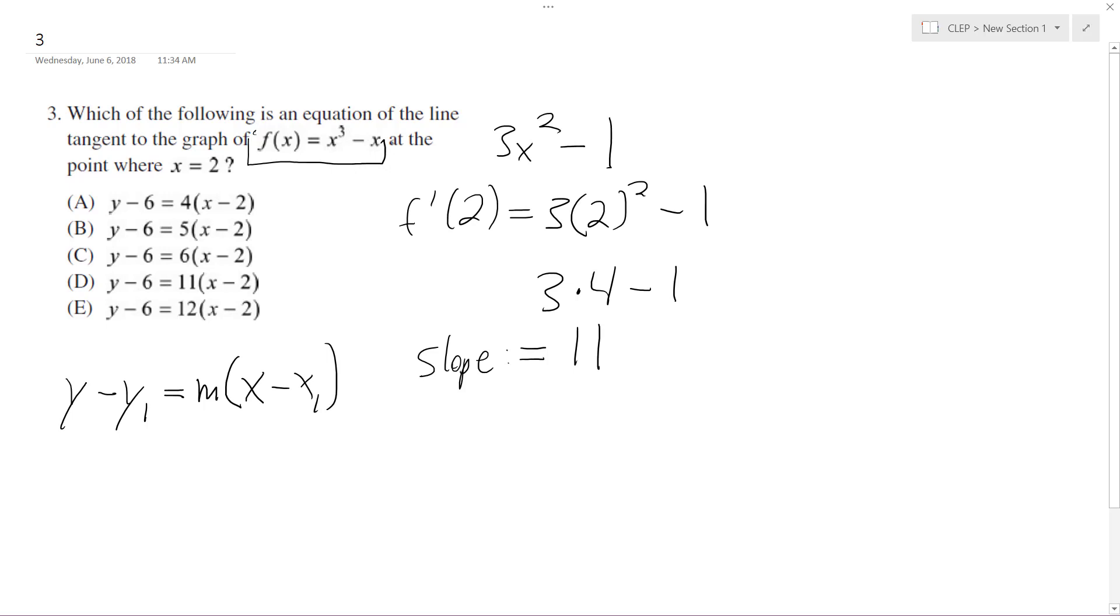So I'm going to plug in 2 there. So if I plug in 2 into the original equation, I get 2³, which is 8, minus 2, which is equal to 6. So my point's at (2, 6).